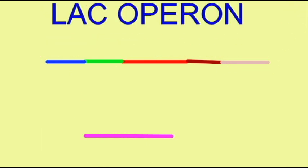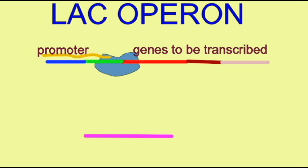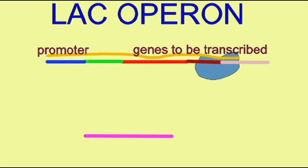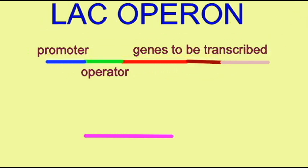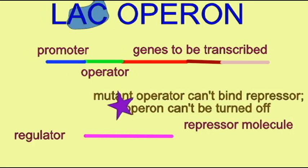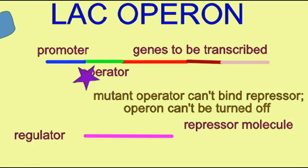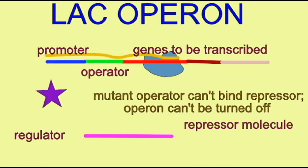The operator region of the lac operon may also be mutant. Some mutant operator regions can't bind the repressor, and so therefore this operon can't be turned off. Once again, this is inefficient to transcribe genes to metabolize lactose if lactose isn't present.